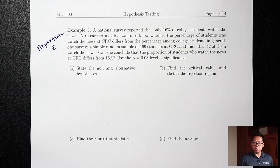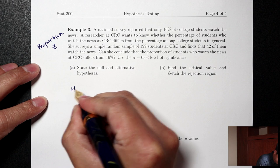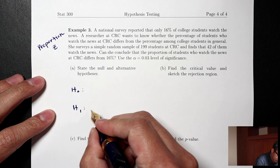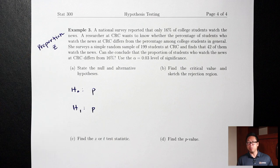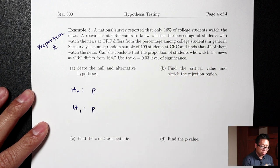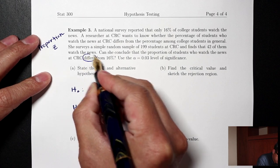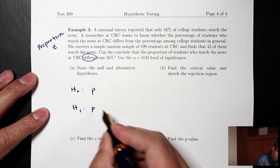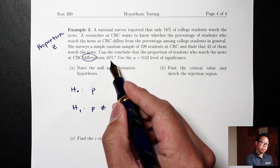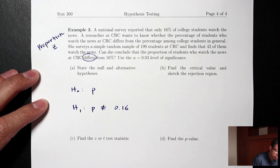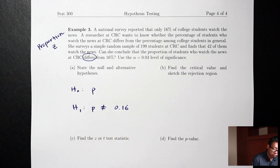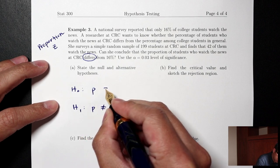Part A: state the null and alternative hypotheses. For proportions, we use P. The question asks whether the proportion differs from 16% — the keyword 'differs' means not equals. So H1 is P not equals 0.16. H0 is the same with an equals in the middle: P equals 0.16.